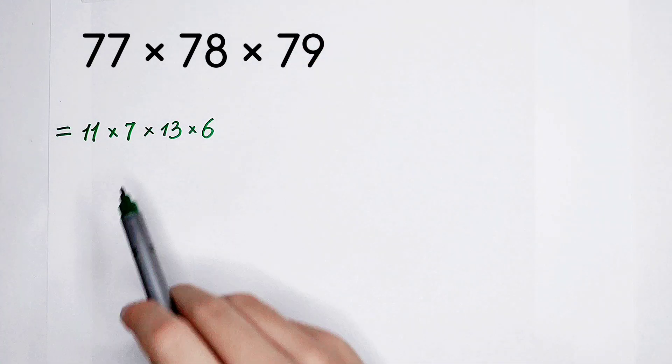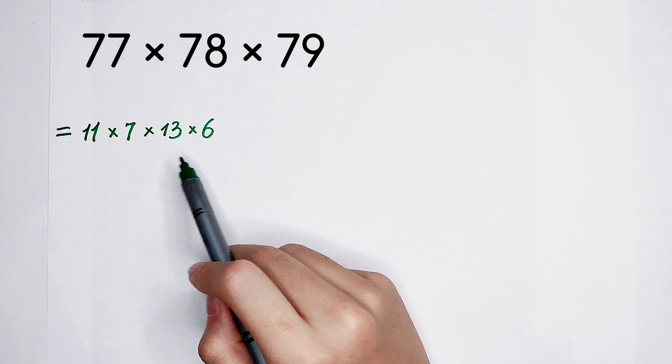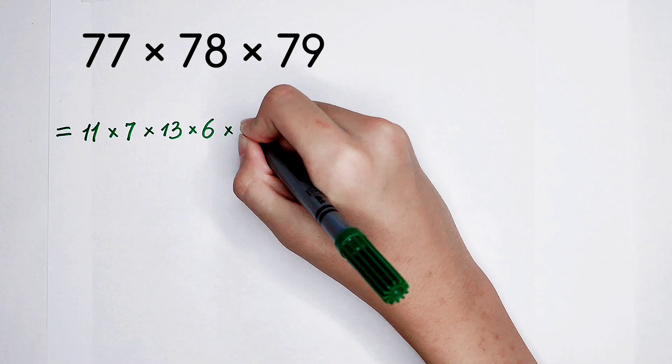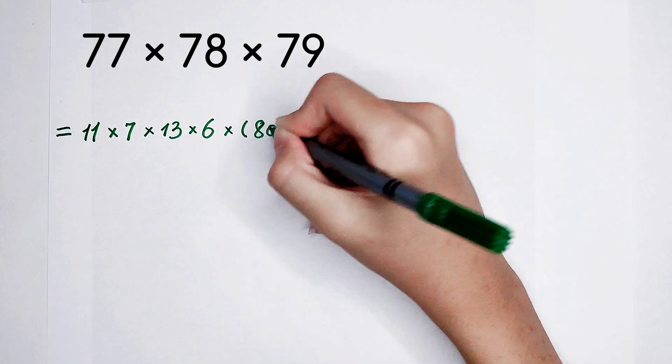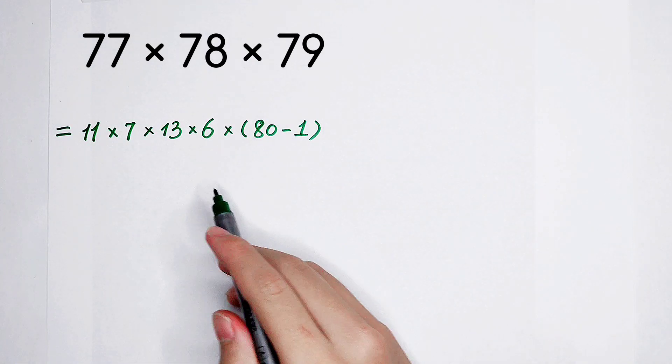So if you can figure out this, you're a genius. Actually, it is not easy to figure out this. And then 79, it is 80 minus 1. It is not difficult to figure out.